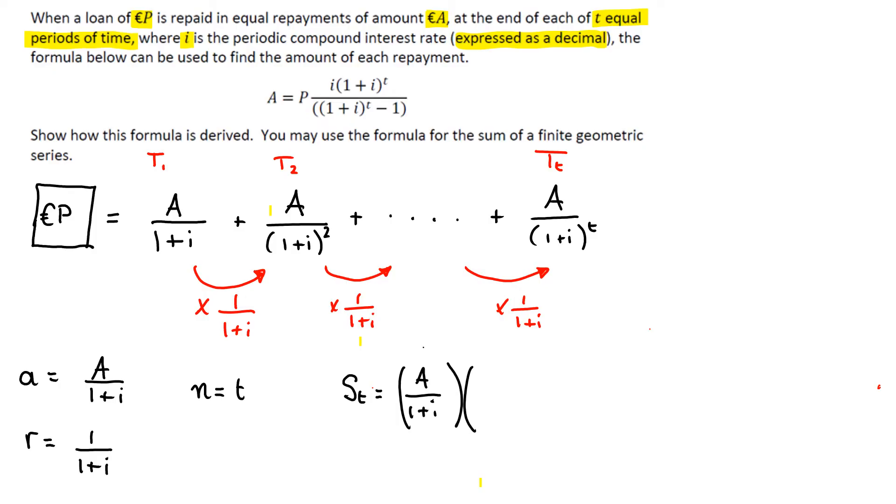times 1 minus R to the power of N, which in this case is T, all over 1 minus R, 1 plus I.